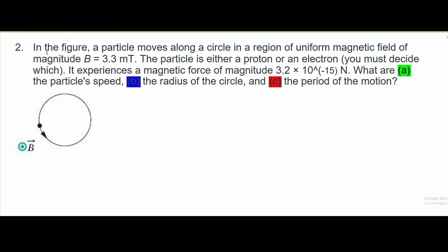For question 2, in the figure a particle moves along a circle in a region of uniform magnetic field of magnitude B equal to 3.3 mT. The particle is either a proton or an electron — you must decide which. It experiences a magnetic force of magnitude 3.2 times 10 to the negative 15 newtons.